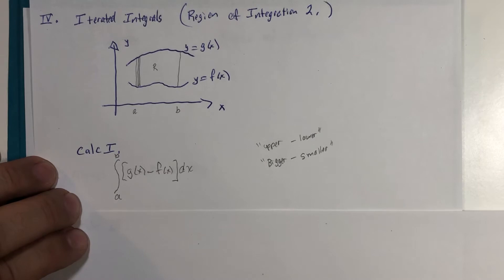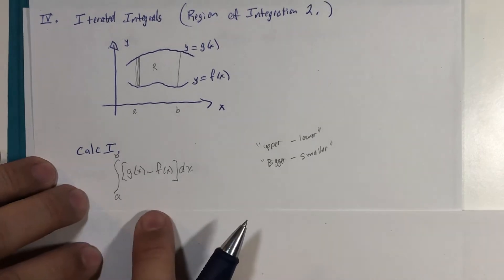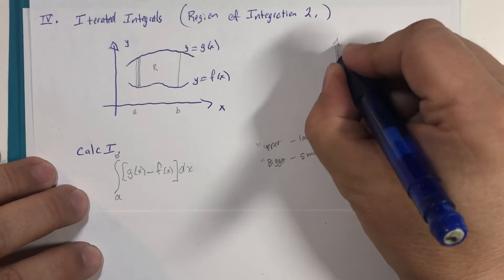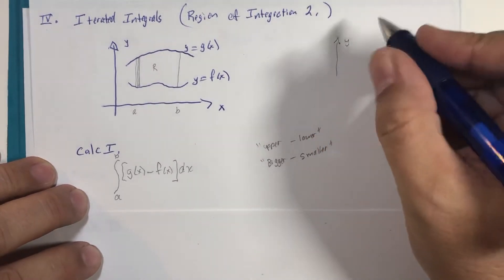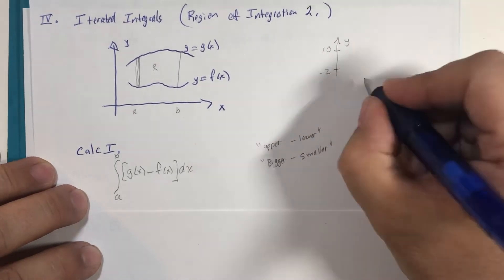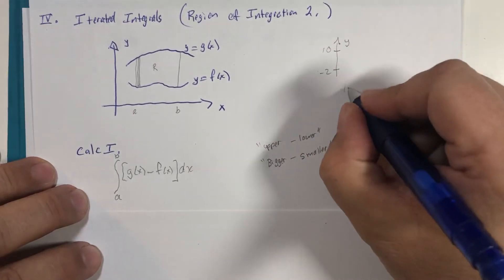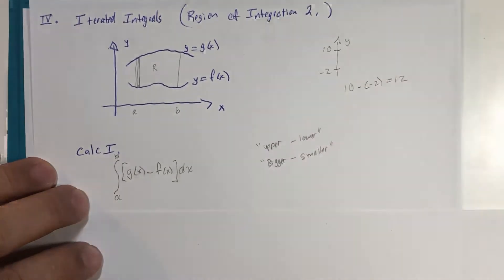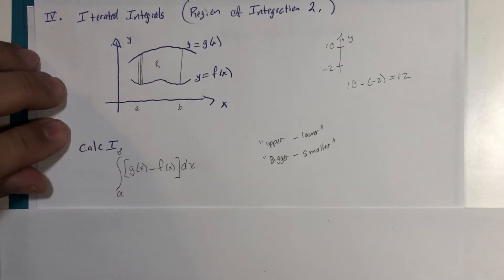That's how you find out the difference in a positive way between two values. For example, in the y-axis you're going to go from negative two to ten, you know the distance between those is ten minus negative two, which is twelve. So bigger minus smaller or upper minus lower.